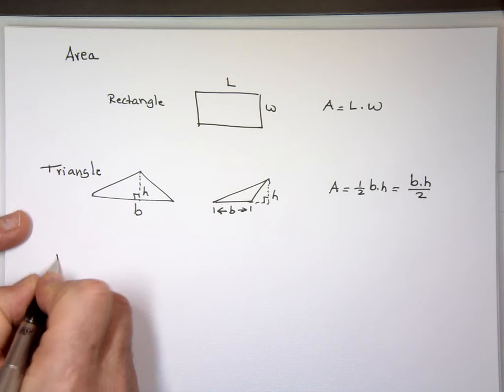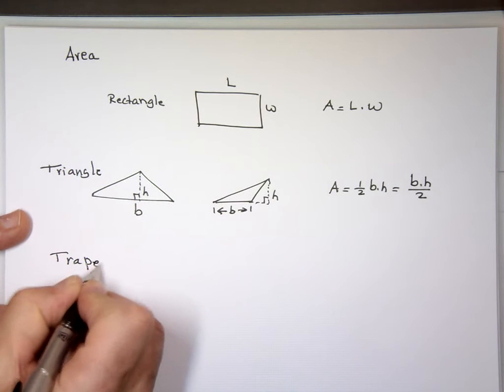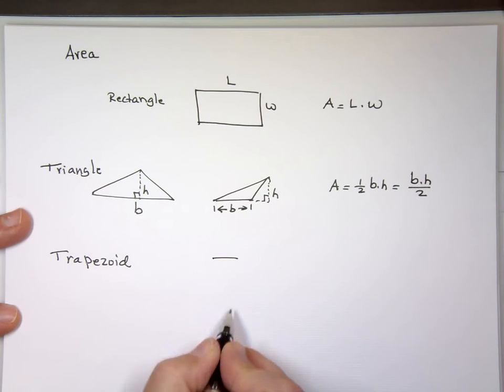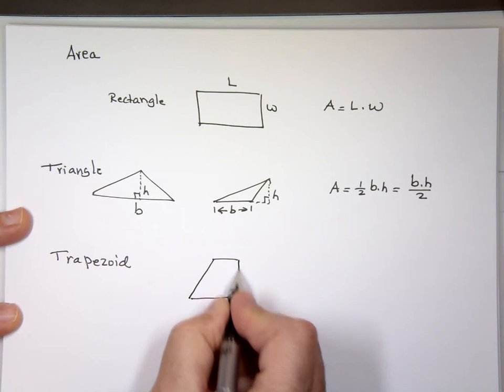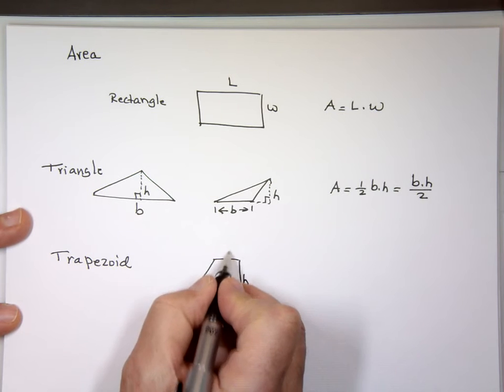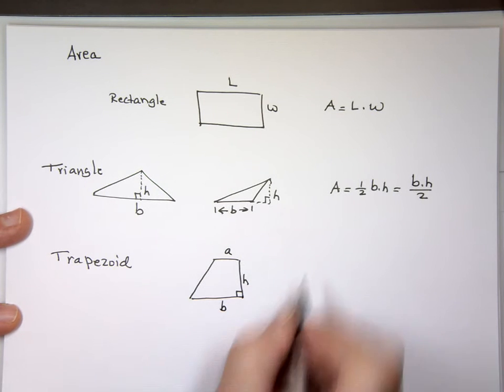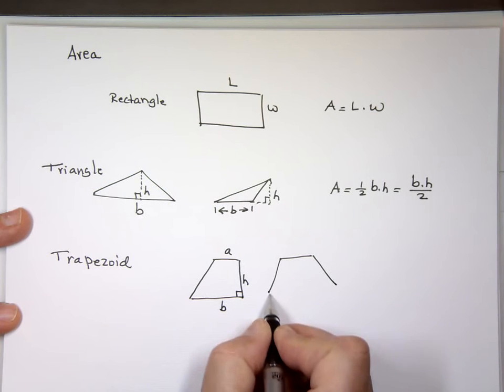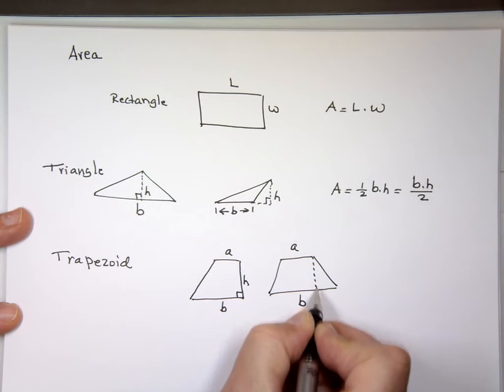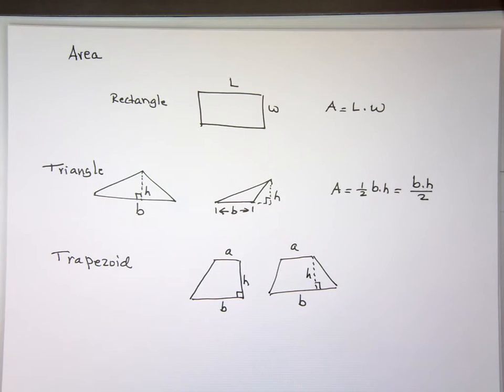If you have a trapezoid, you get the top and the bottom are parallel, the other two are not. They could look like this. That's a trapezoid. If this is 90 degrees, that's the height then. We'll call this A and this is B. Or it could look like this. Then the height will be this. Only two sides are parallel, the other two are not. That's called trapezoid.